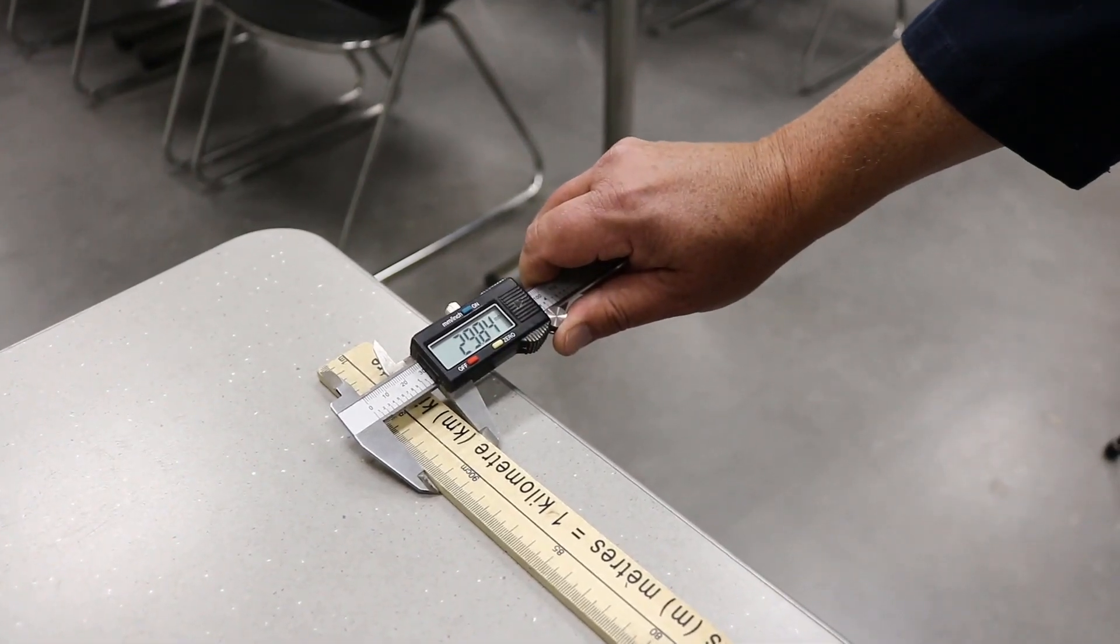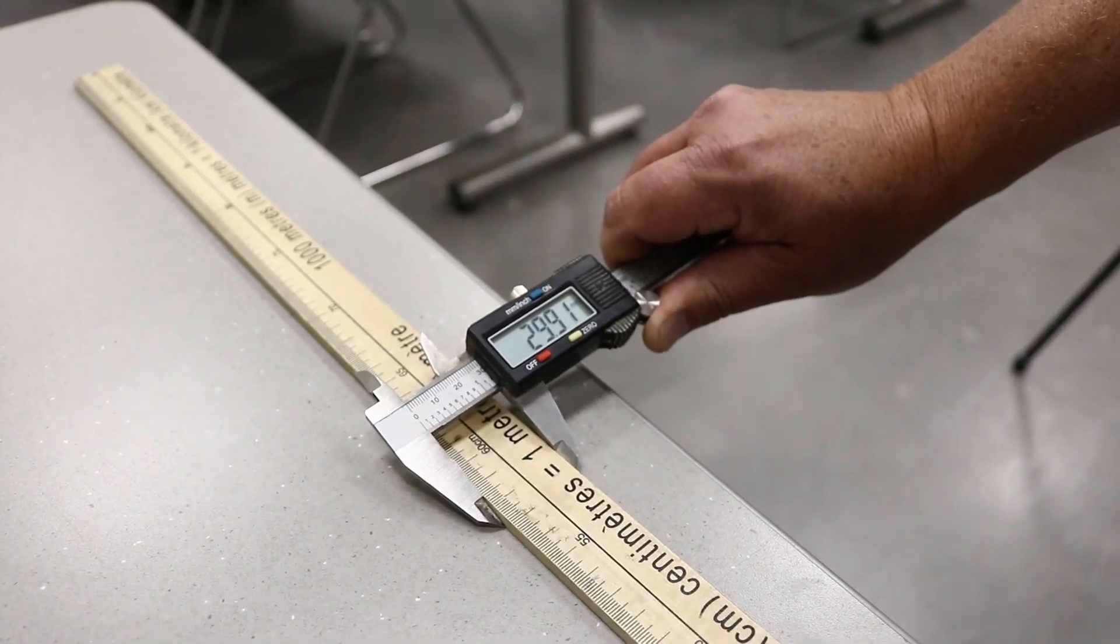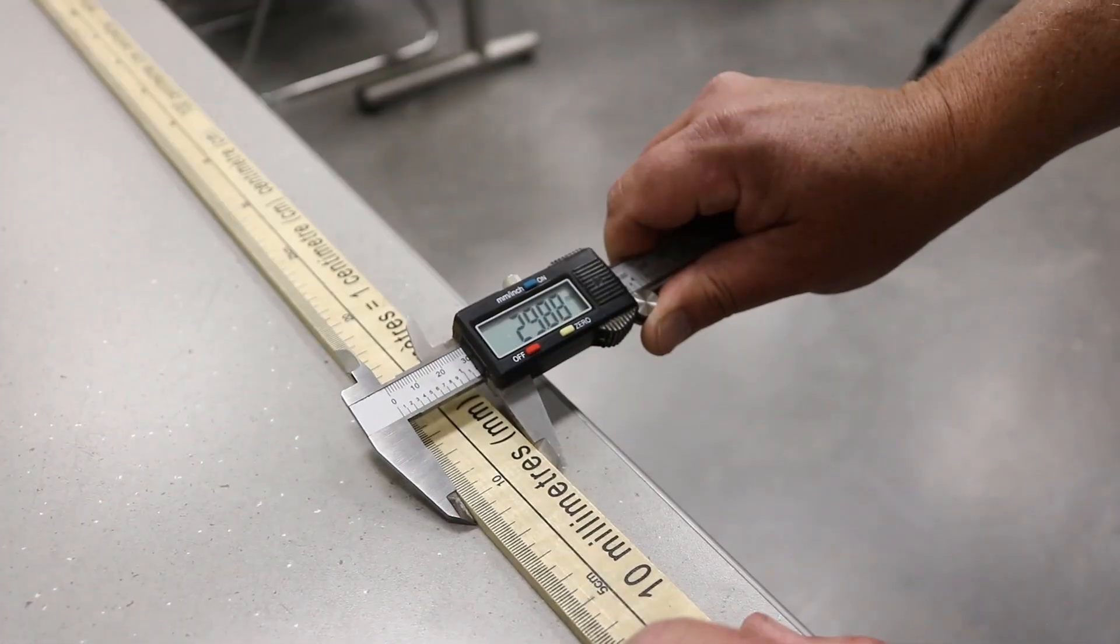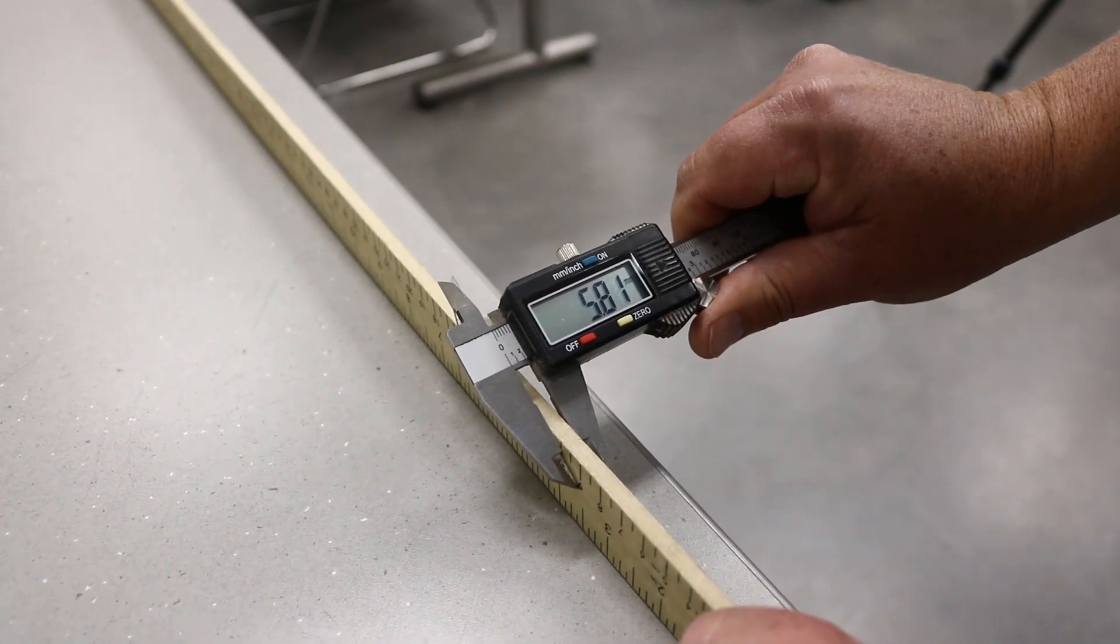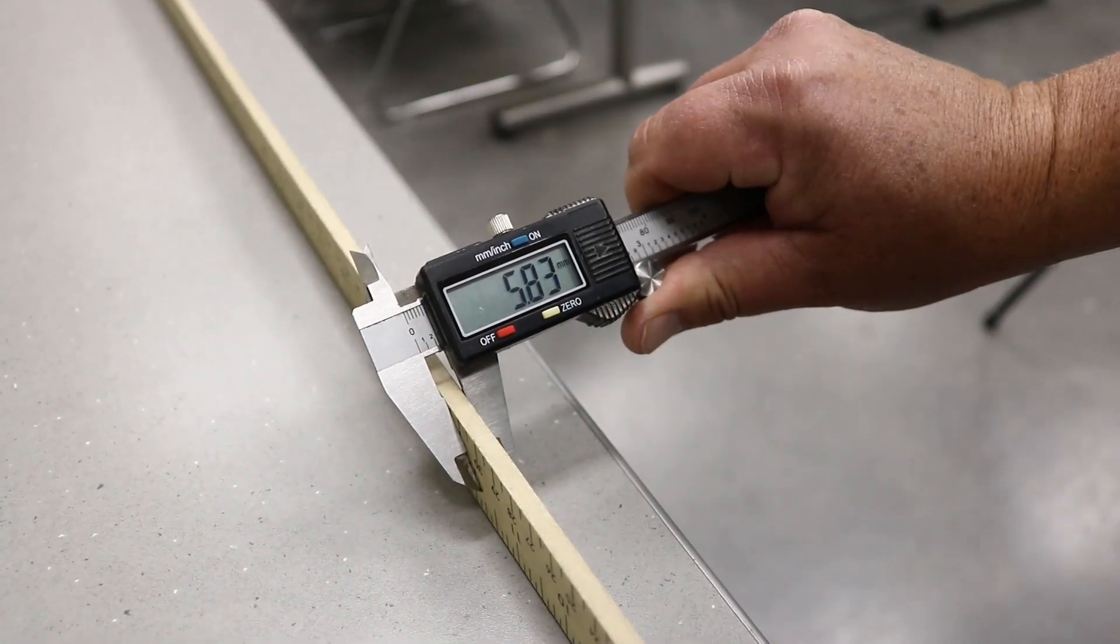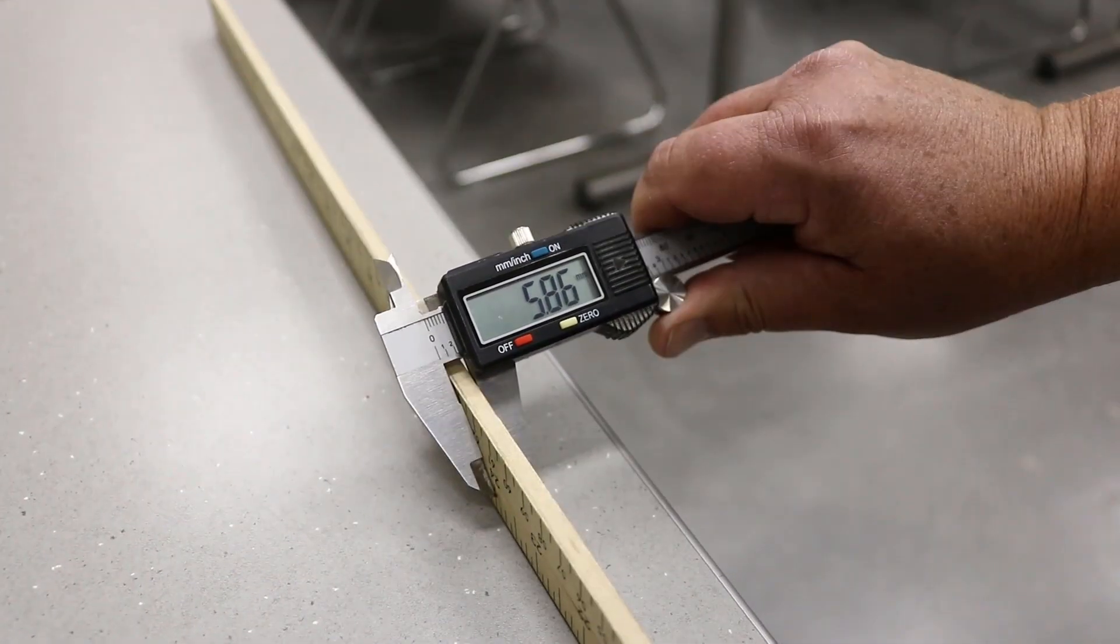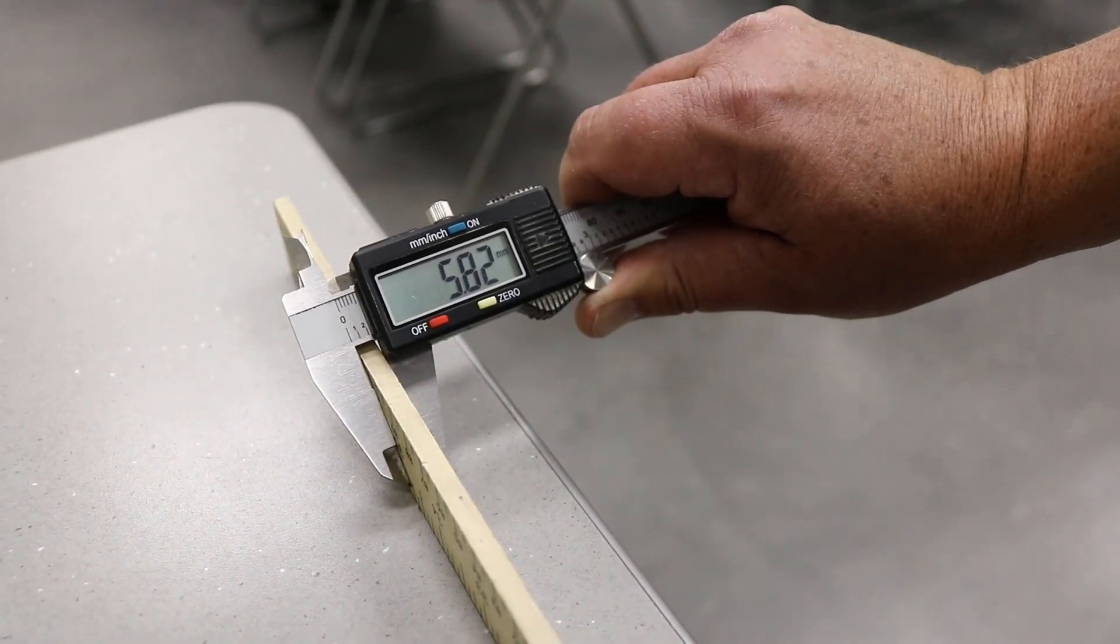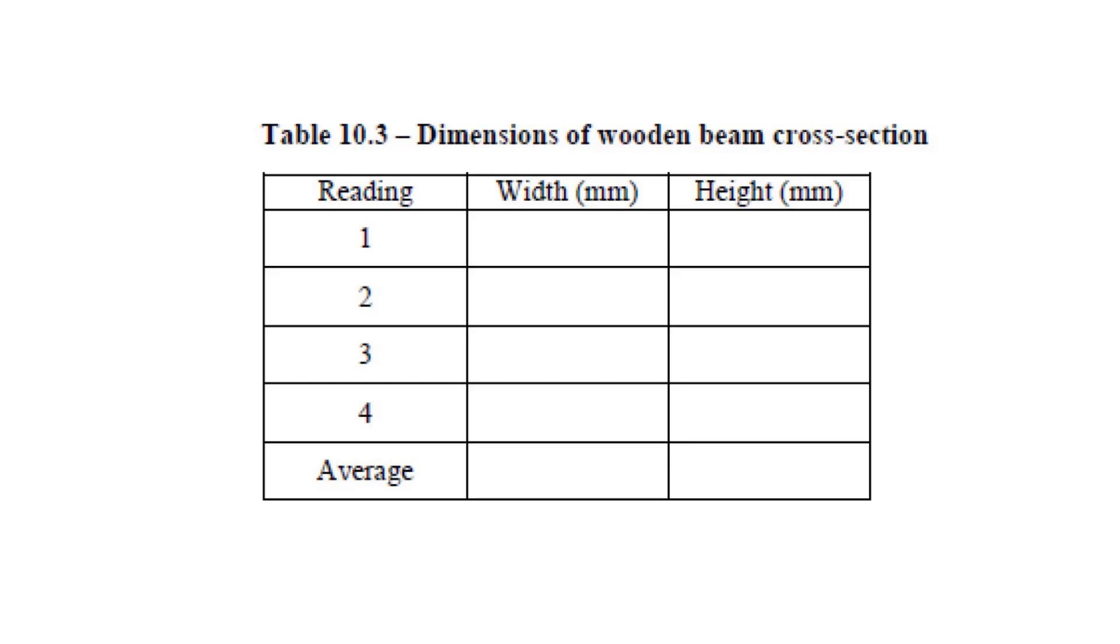For this third and final part, first determine the average cross-sectional dimensions, width and height, of the meter stick using the digital calipers at four locations along the length. Using the average dimensions, you will calculate the moment of inertia I of the cross-section about the axis of bending. Record these measurements and determine their averages in table 10.3.